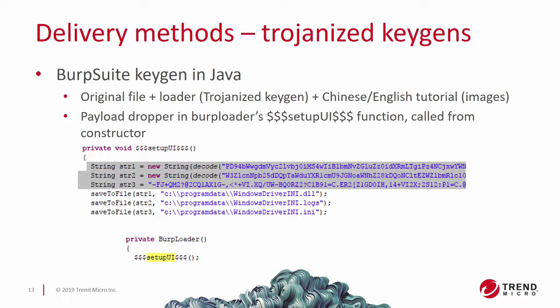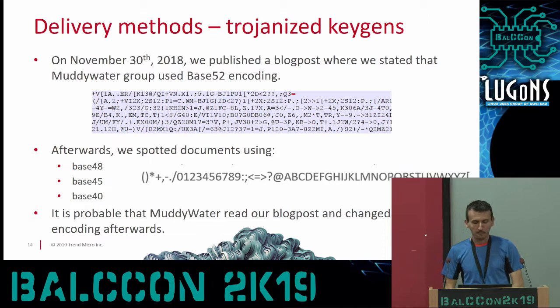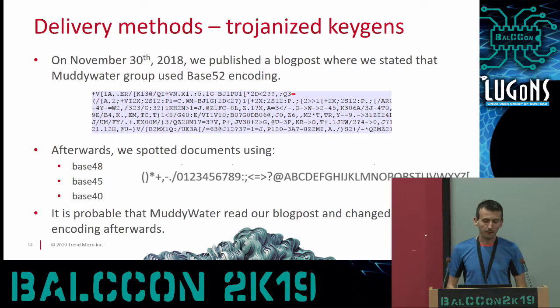Another delivery method we found was trojanized keygens. There is a known tool called Burp Suite, and we found a keygen written in Java that was trojanized. You can see the highlighted lines showing that after running the keygen it dropped some files - one of MuddyWater's backdoors. I mentioned base52 encoding, which is very atypical for threat actors - they usually use base64 - but in this case we found base52 with an untypical alphabet. You can see the long string starting with brackets, star, plus, minus, numbers, letters - this 52-character alphabet is how they encode their payloads.